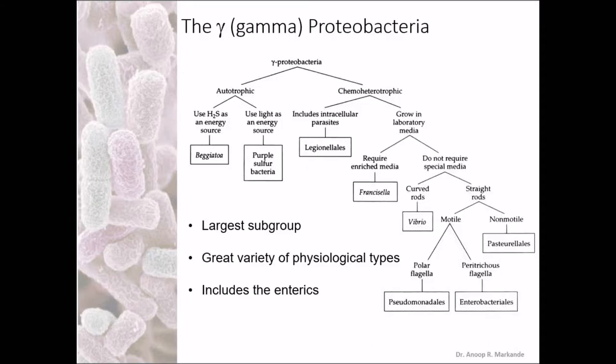Now we are shifting to Gamma Proteobacteria. These are the largest subgroup among the Proteobacteria. They have the greatest variety of physiological types and include the Enterobacteriaceae — the bacteria which inhabit human and other mammal guts.